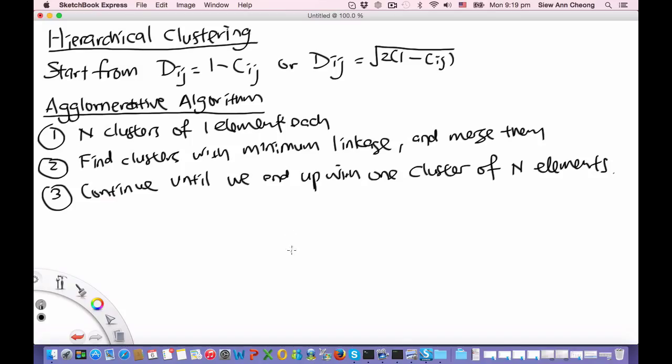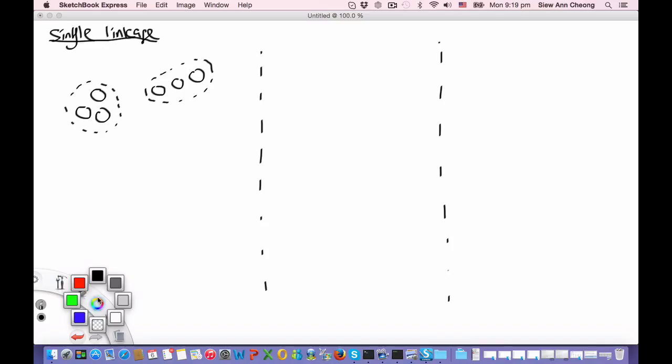So let me show how that looks like by going to a new page. Here's one cluster with three elements and here's another cluster with three elements. Now in the single linkage algorithm for hierarchical clustering, what we will use as the distance between two clusters is the minimum distance. So this is the minimum distance between the two clusters, and this is the single linkage algorithm.